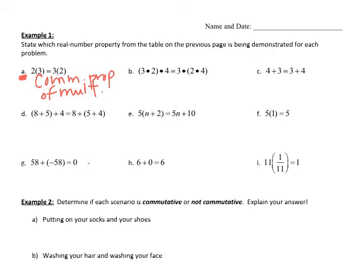Here we have multiplication that has been grouped. The type of problem where we're grouping states that we're going to be using the associative property — these two numbers associate with each other within the group. So this is the associative property of multiplication. Just make sure you see if it's addition or multiplication, and then check whether there are parentheses to consider. Parentheses indicate associative.